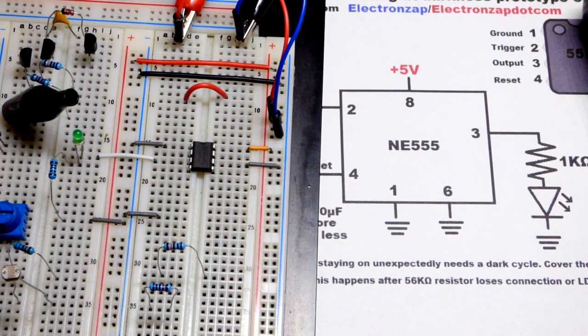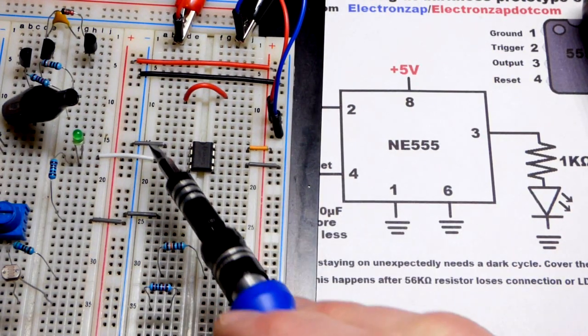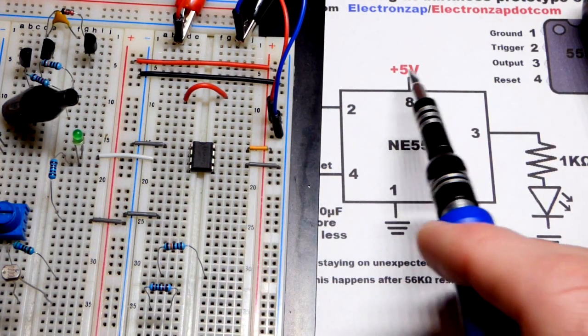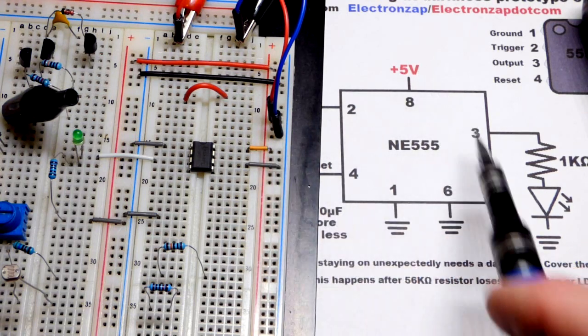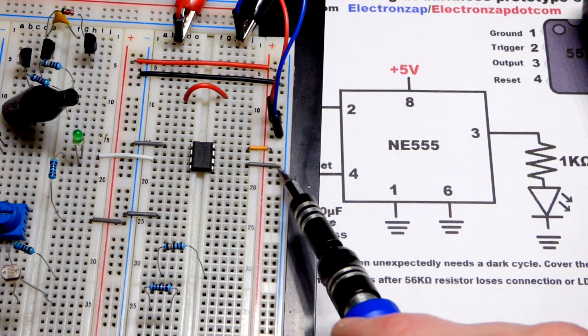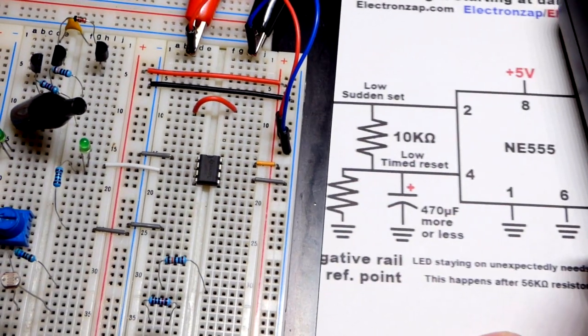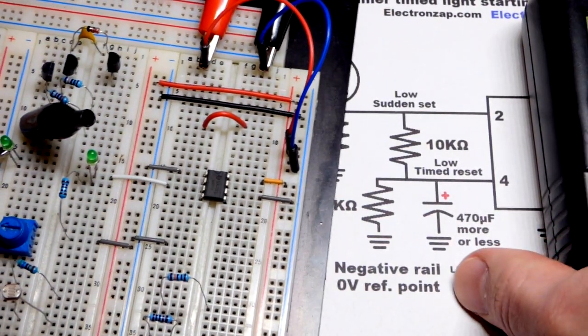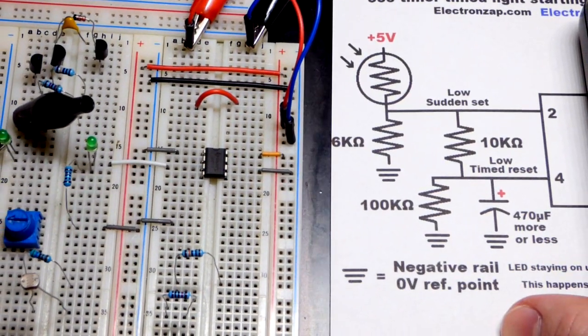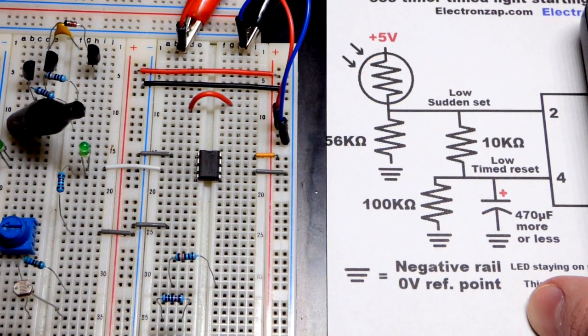Now, you can see we got pin one to the negative rail, as we said before, pin five to the positive. Pin six to the negative rail to prevent it from doing anything. Now let's get to the actual circuitry that makes all of this happen for the timing and whatnot.